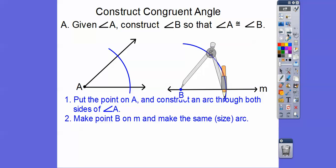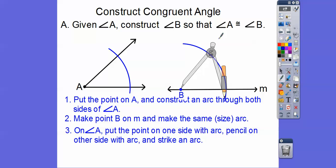So the next step is we're going to on angle A, we're going to put the point on one side where the arc goes through the angle. So right there where that blue arc goes through the angle.